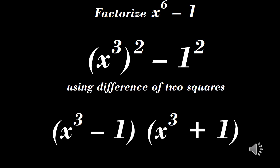Factorize x raised to power 6 minus 1. If we break it down, 6 will give us 3 times 2. So we have x raised to power 3 raised to power 2 minus 1 square.